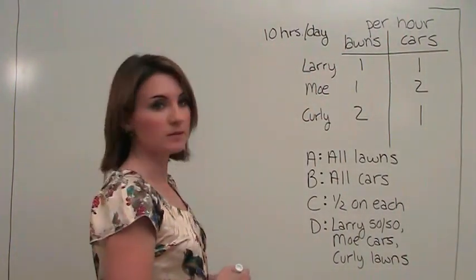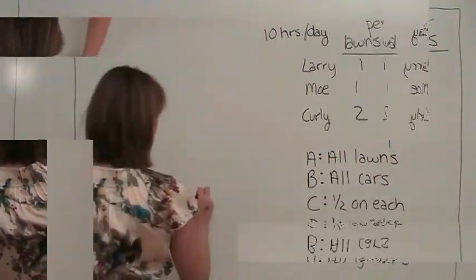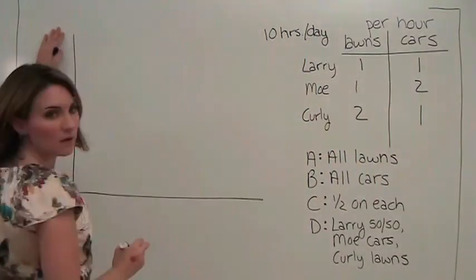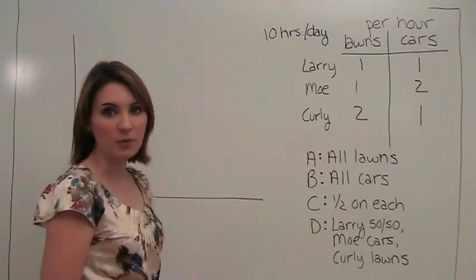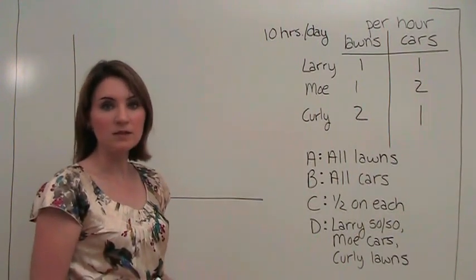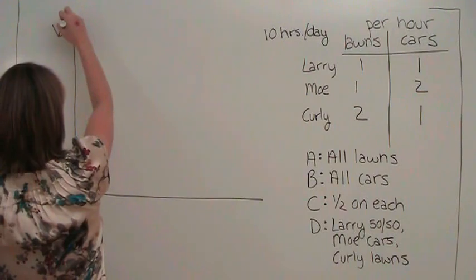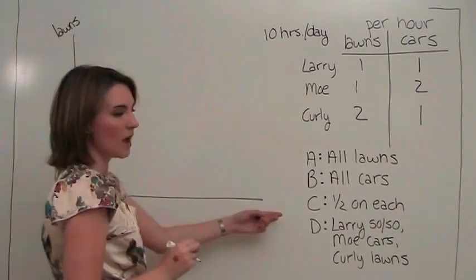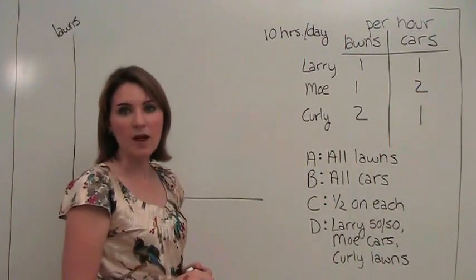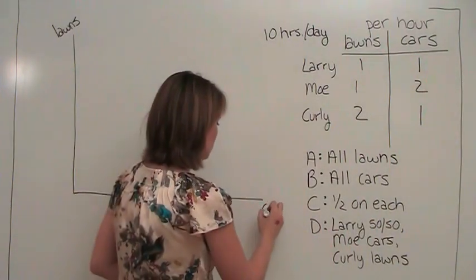We can draw something that looks like this. On this axis we can put how many lawns are being mowed. And on the other axis we can put how many cars are being washed.